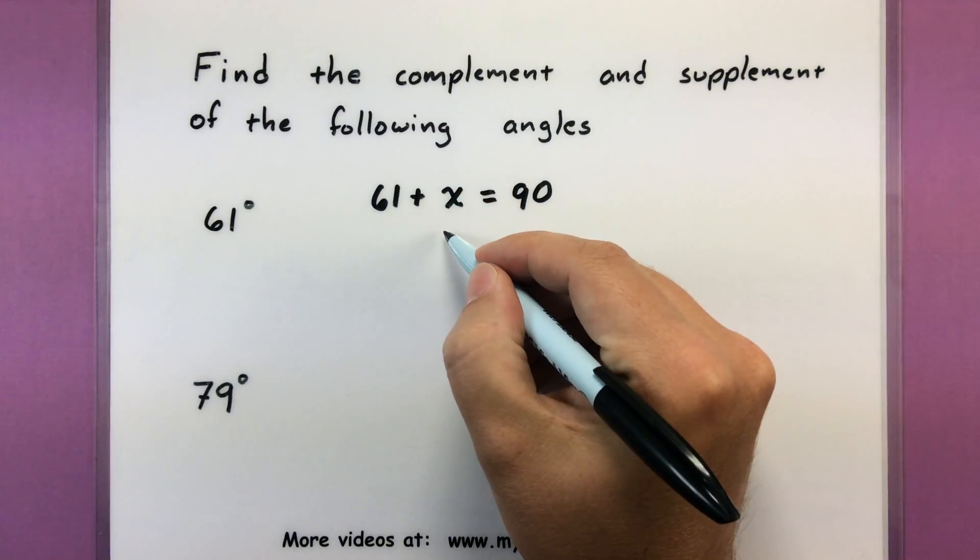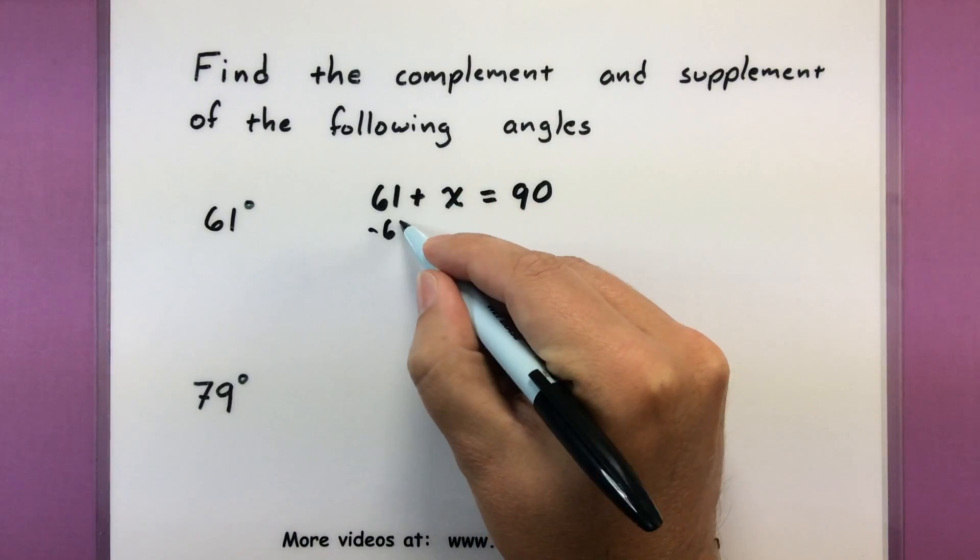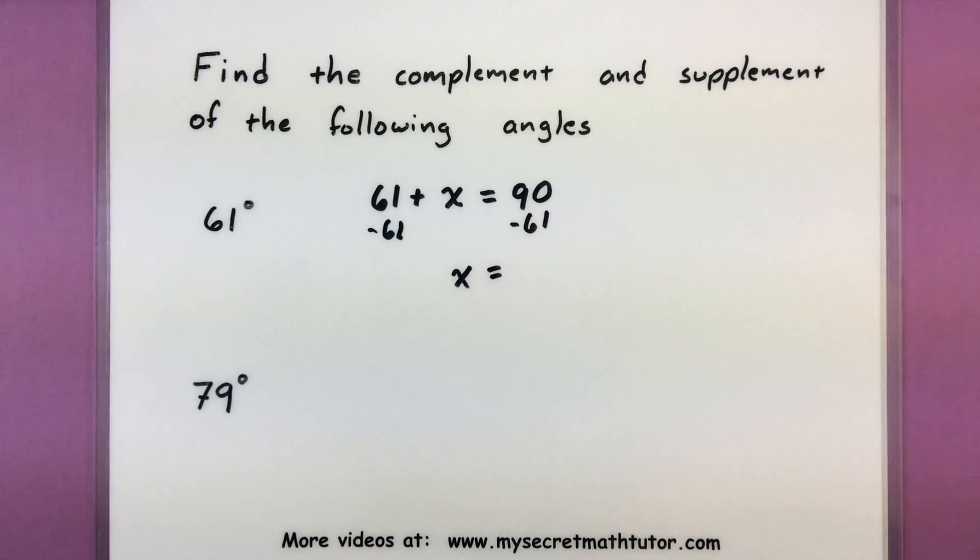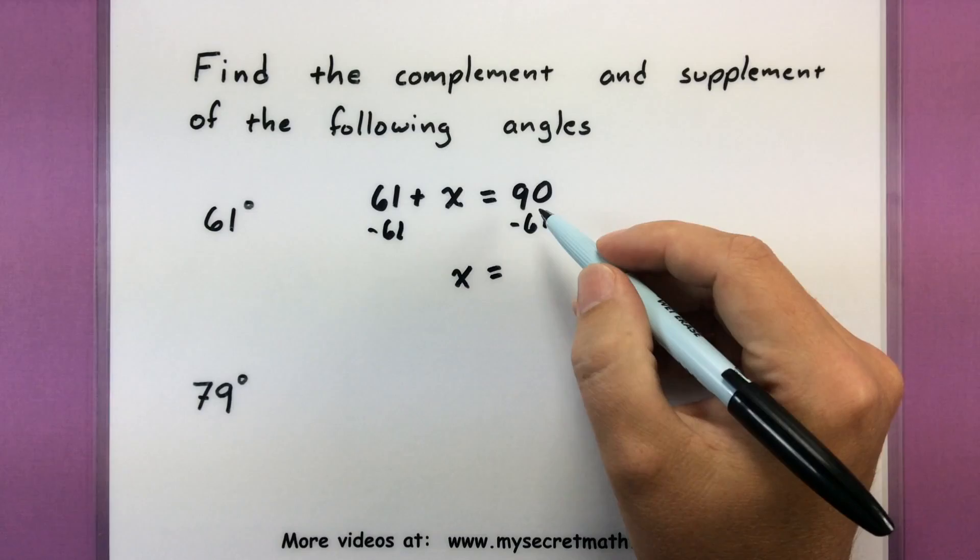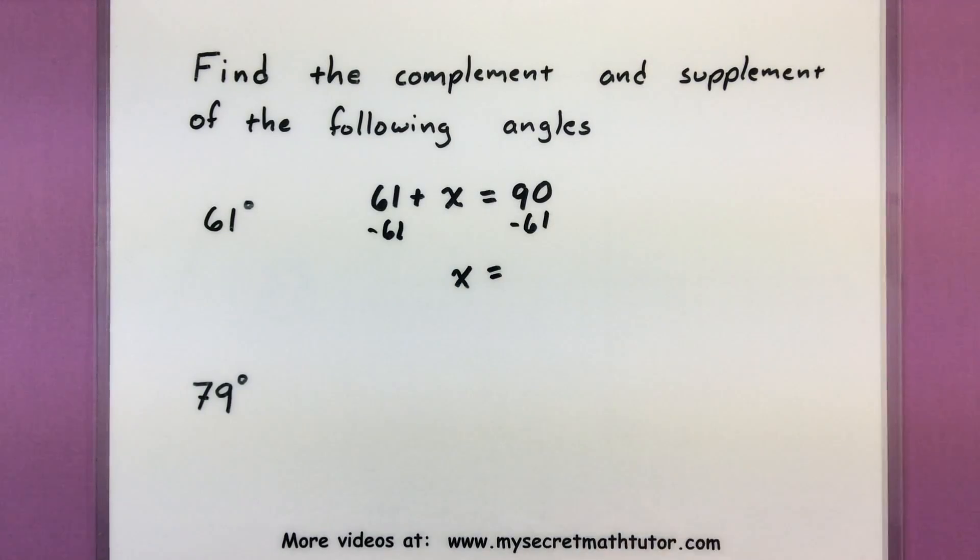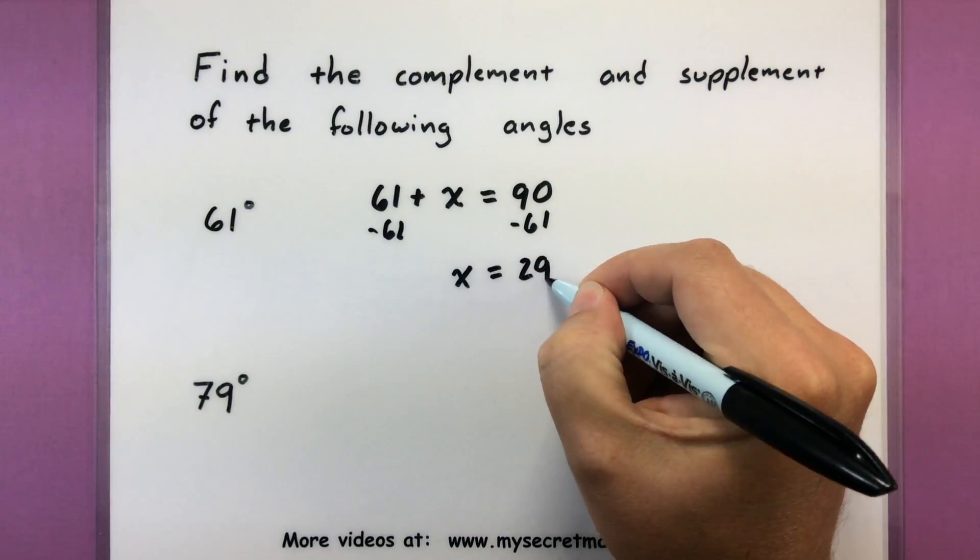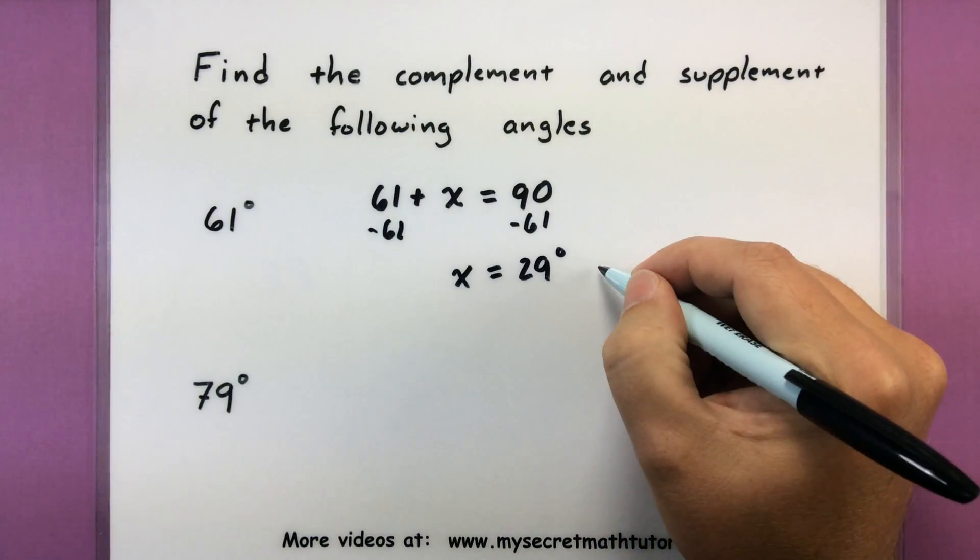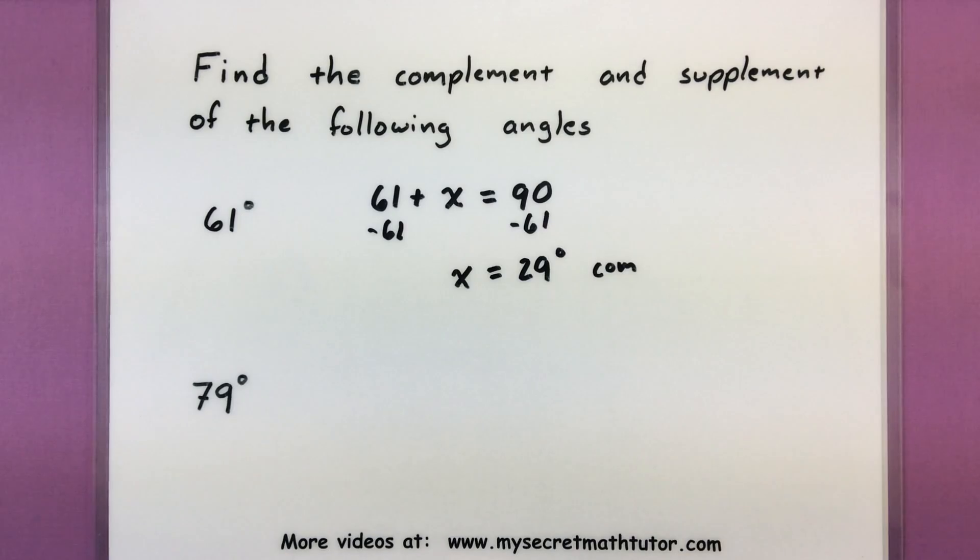So as soon as we solve for this mystery x by subtracting 61 from both sides we will have our mystery angle. So our mystery angle is 29 degrees and this will be its complement.